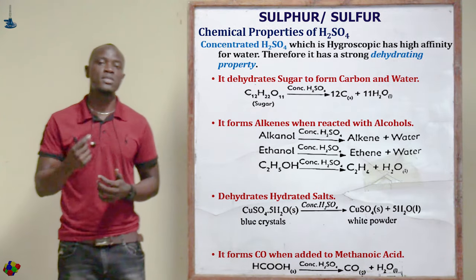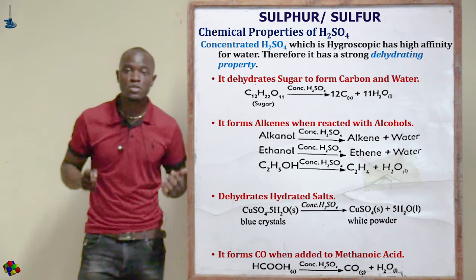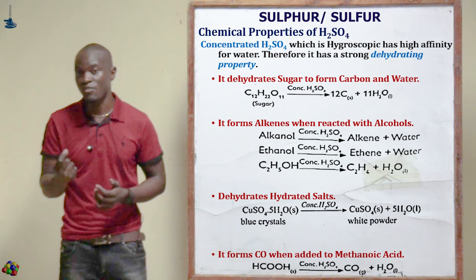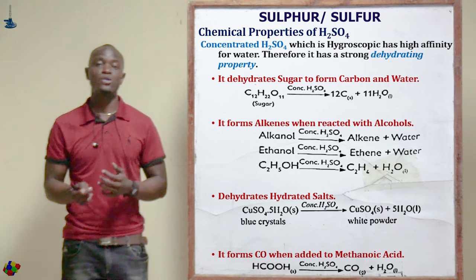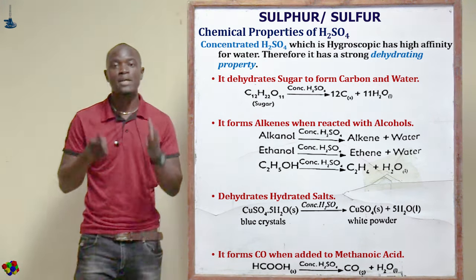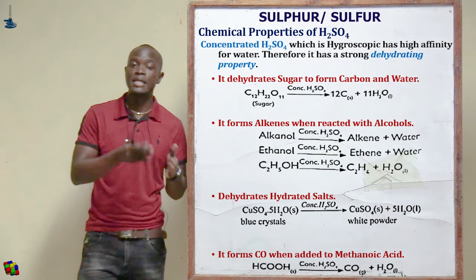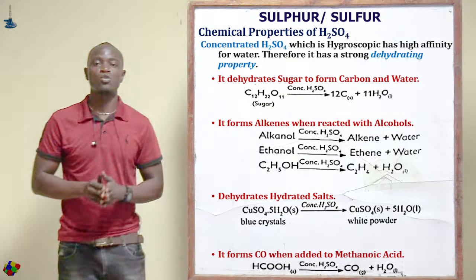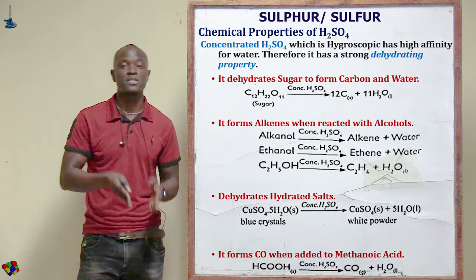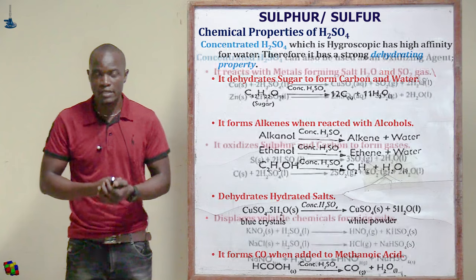We do not use concentrated sulfuric acid to dry ammonia gas because it would react with the ammonia to form ammonium sulfate, which we do not need — we only need ammonia. Instead, anhydrous calcium chloride is used to dry ammonia gas.